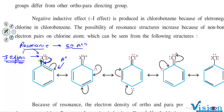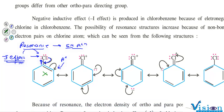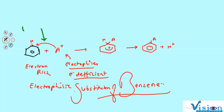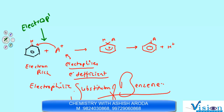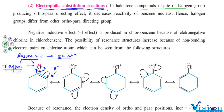However, when both phenomena take place simultaneously, in haloarene compounds, in spite of the halogen group producing an ortho-para directing effect, it decreases the reactivity of the benzene nucleus. The electrophilic substitution reaction does not occur as easily as in benzene. Halogen groups differ from other ortho-para directing groups.